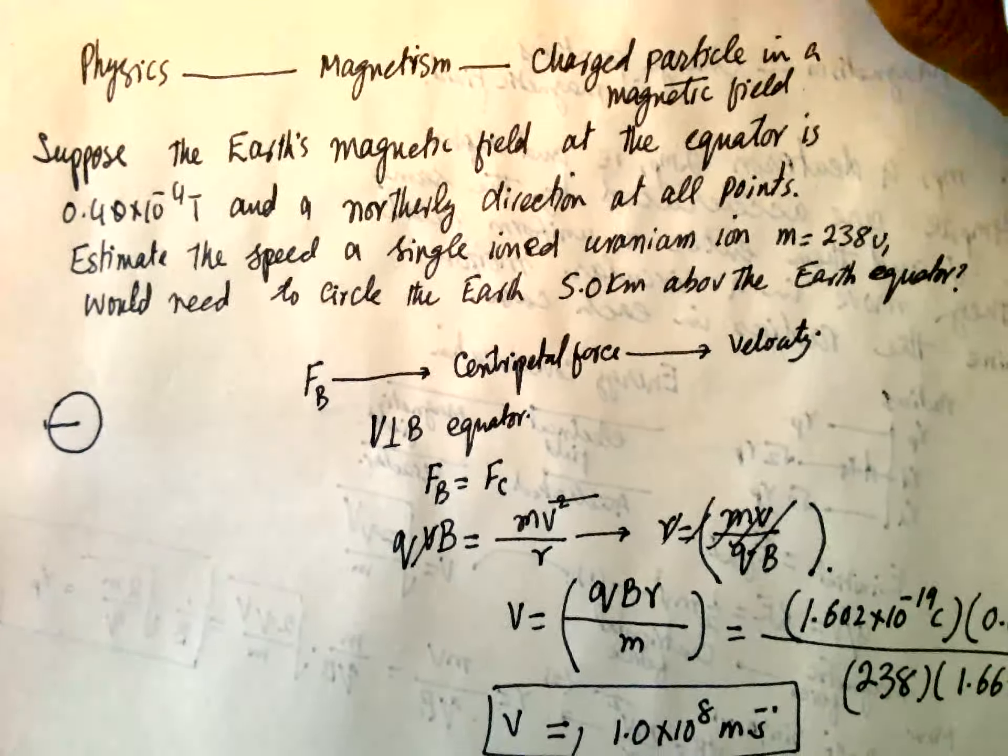This is the velocity of the uranium ion due to the Earth magnetic field. This is the circling. This is interesting that if FB, how is it compared to FG. This is equal to QVB. Now we have a V, QVB, and this is equal to MG.